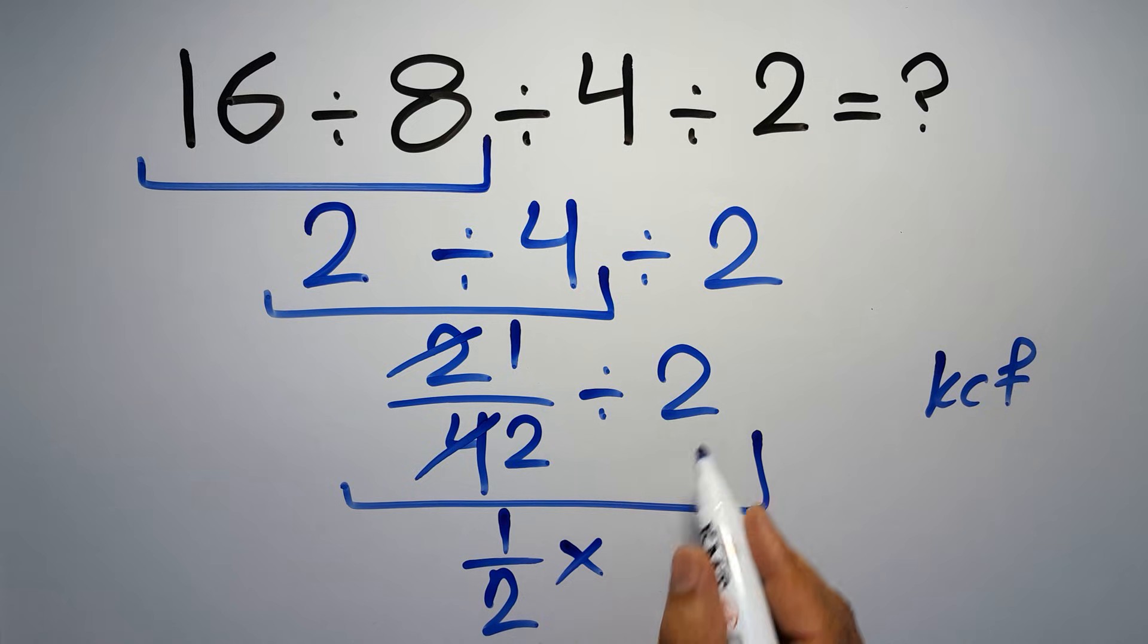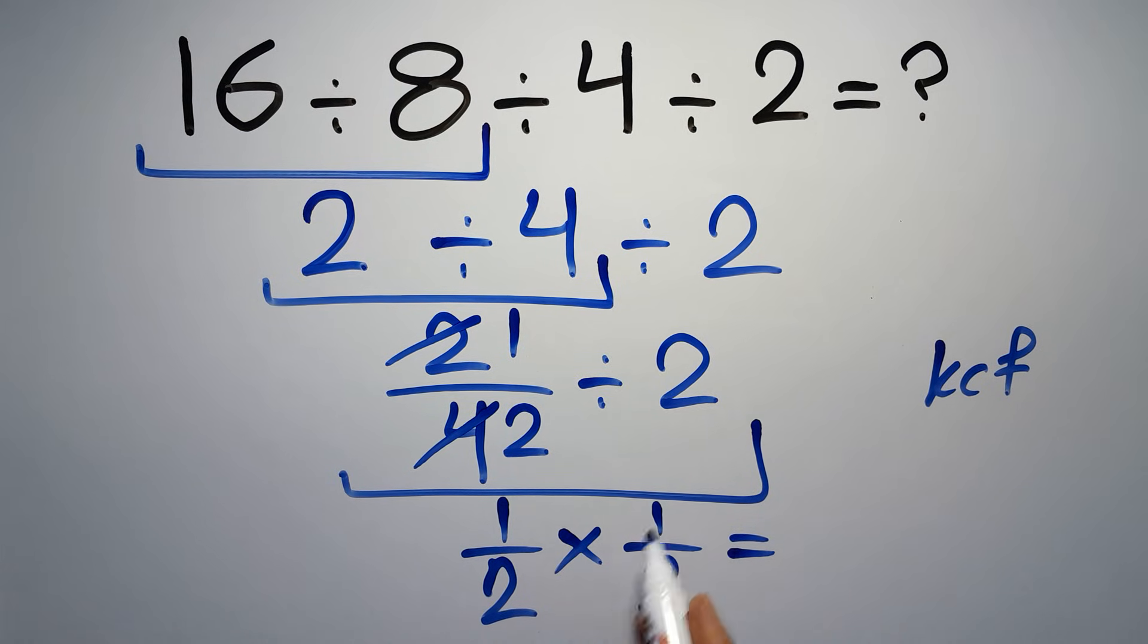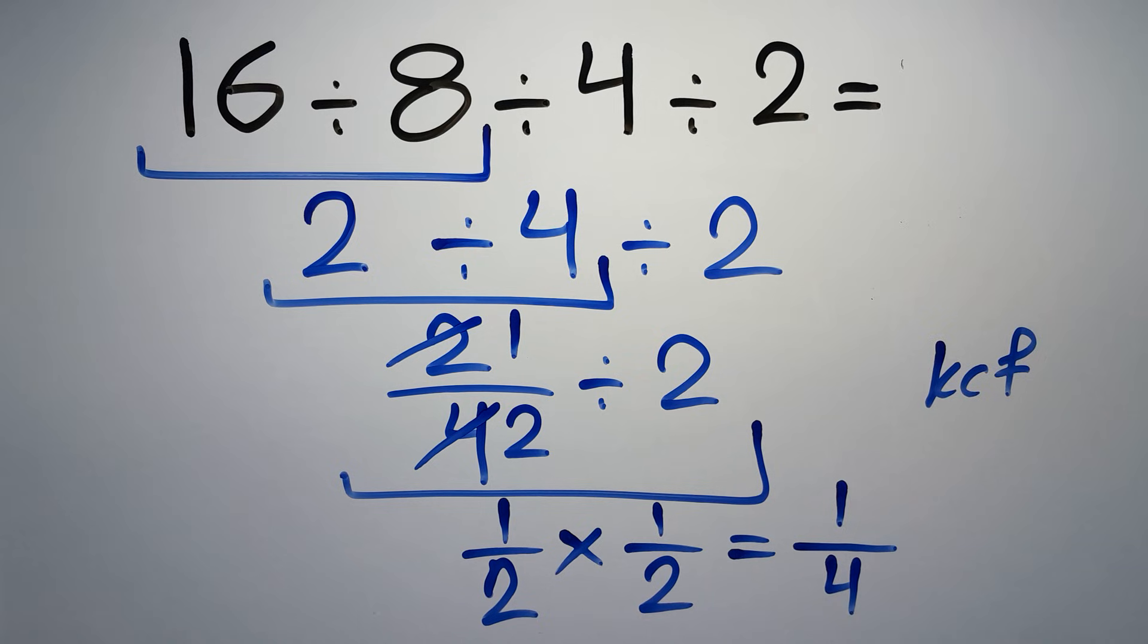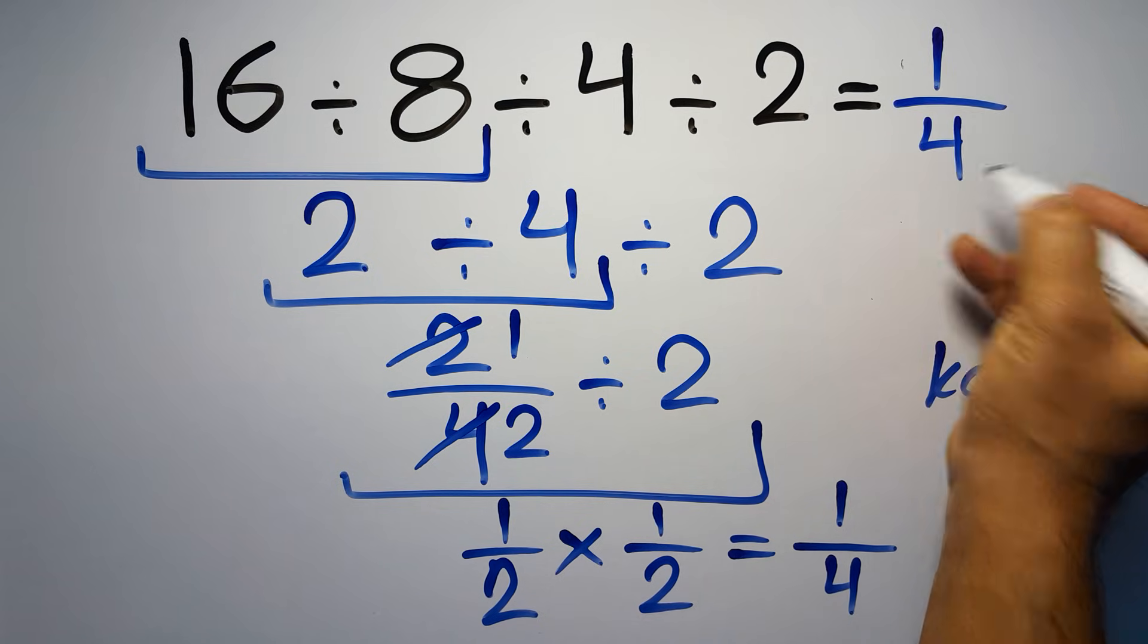to multiplication and flip the second fraction. So we have 1 over 2 times 1 over 2, which equals 1 times 1 gives us 1, and 2 times 2 equals 4, so 1 over 4. This is our final answer to this problem. The correct answer is 1 over 4.